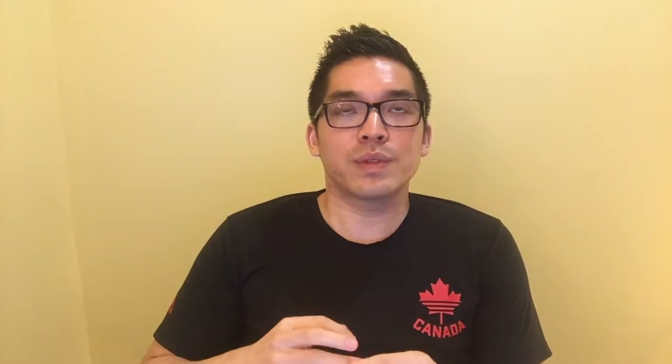If the person has a hyperthyroid nodule, the next best step is radioactive iodine uptake. This will help tell whether it's diffuse, one nodule, or multi-nodular. If it's diffuse, that's Graves' disease. If it's one area, that's toxic adenoma. If it's patchy and multiple, that's multi-nodular toxic goiter, also known as Plummer's disease.